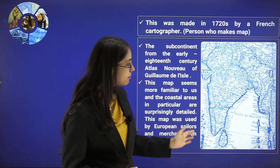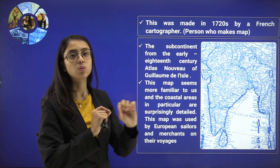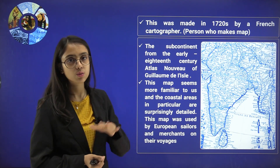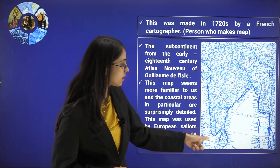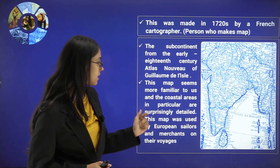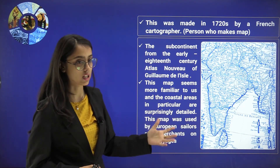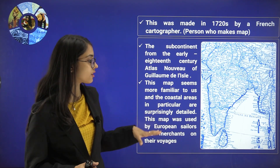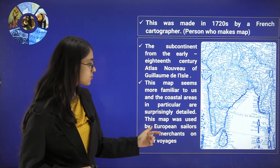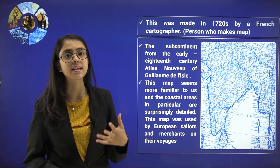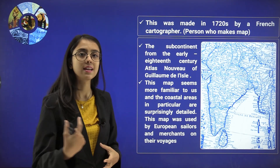If you look at the image you can see it is somewhat similar to the outline of India that we have today. There is a coastal area — you can see the coastal region. A particular area is surprisingly detailed, not withered at all, with each territory properly marked. This map was used by European sailors when they were travelling from their country towards India.